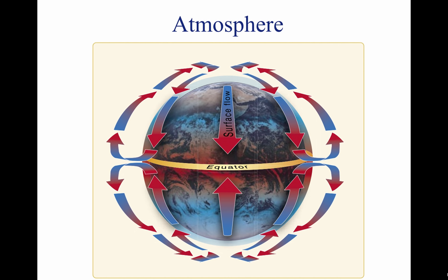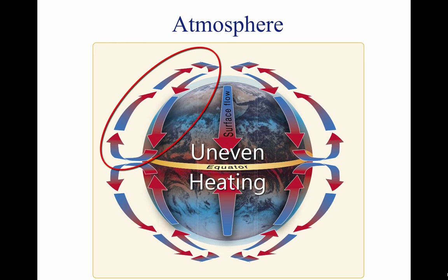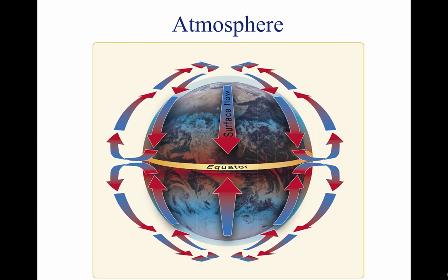The atmosphere is in constant motion. Certain factors combine to set the atmosphere in motion, but a major factor is the uneven heating of the Earth's surface. Earth is warmed by energy radiating from the sun. This process causes a circular motion that results when warm air rises and is replaced by cooler air. Because the Earth has a curved surface that rotates on a tilted axis while orbiting the sun, the equatorial regions receive a greater amount of heat from the sun than the polar regions.